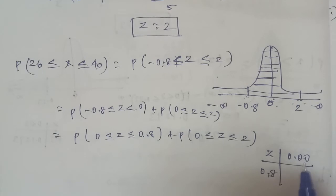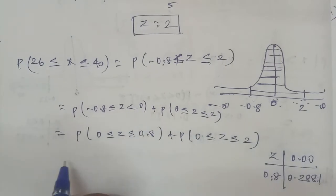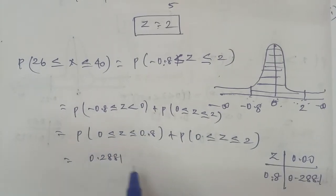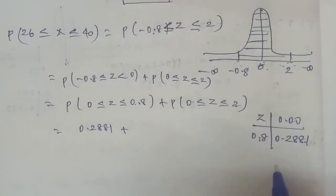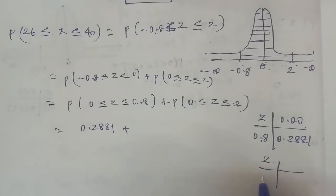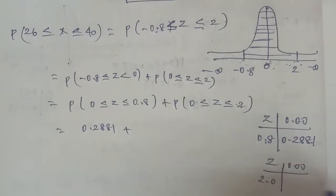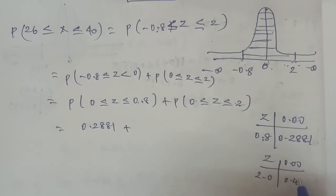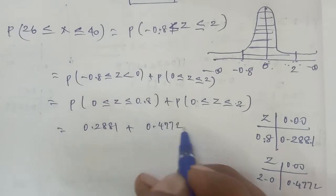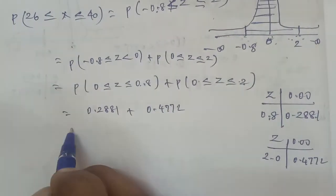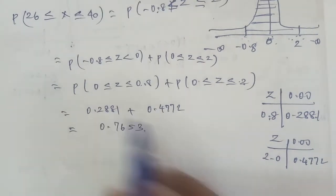From the table, the value for Z = 0.8 is 0.2881. And from the normal distribution table, for Z = 2.0, column 0.00, the value is 0.4772. Adding these two values together, we get the answer 0.2881 plus 0.4772 equals 0.7653. This is the answer for sub-problem 1.